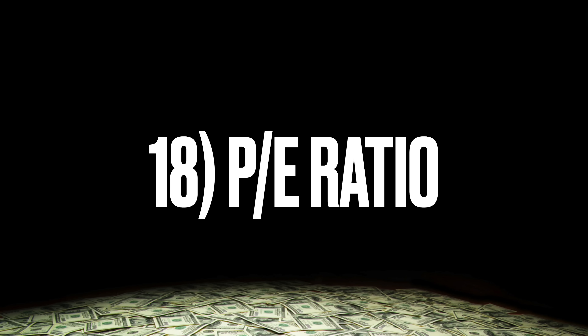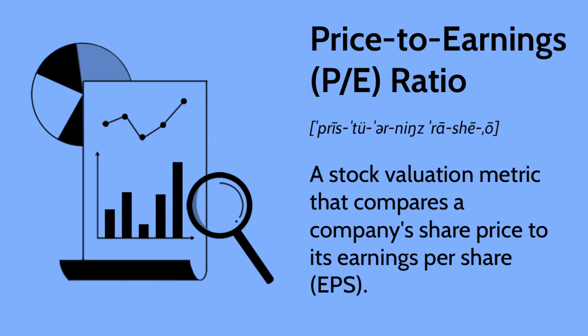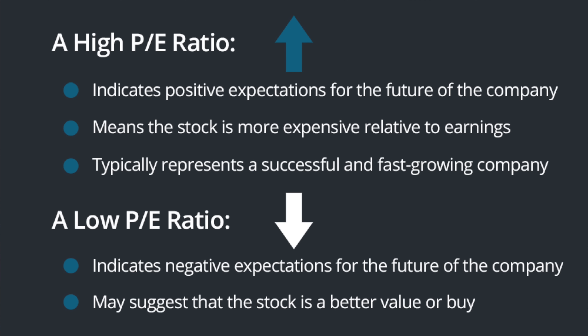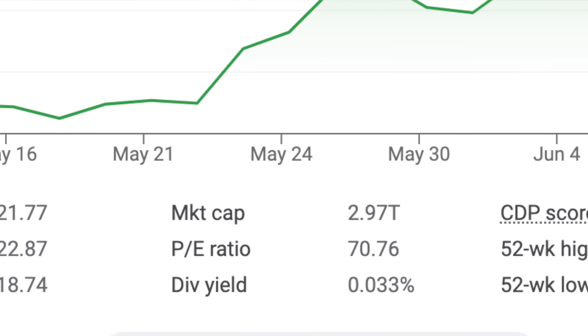The next term is PE ratio, or price-to-earnings ratio. The PE ratio is calculated by dividing the market value price per share by the company's earnings per share. A high PE ratio can mean a stock's price is high relative to earnings and possibly overvalued, while a low PE ratio might indicate the stock price is low relative to earnings. When looking at stocks and ETFs, I like to see PE ratios under 20, definitely under 30. Right now Nvidia is over 70, which is crazy — but many analysts still think it has room to grow. So PE ratio is a great metric, but it's not necessarily the whole picture.